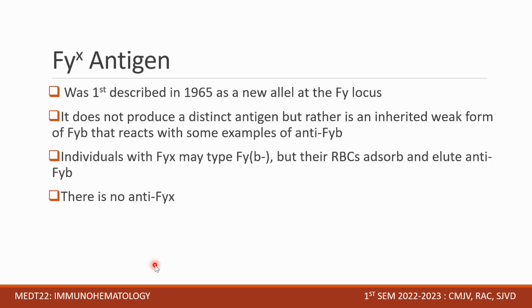The FYX antigen was first described in 1965 as a new allele at the FY locus. It does not produce a distinct antigen but is rather an inherited weak form of FYB that reacts with some examples of anti-FYB. Individuals with FYX may type FYB-negative, but their RBCs absorb and elute anti-FYB. There is no anti-FYX antibody.